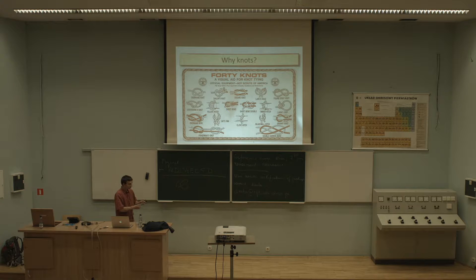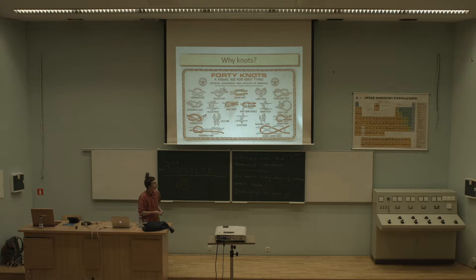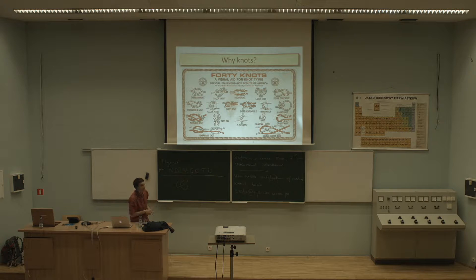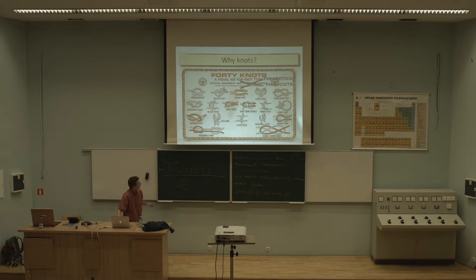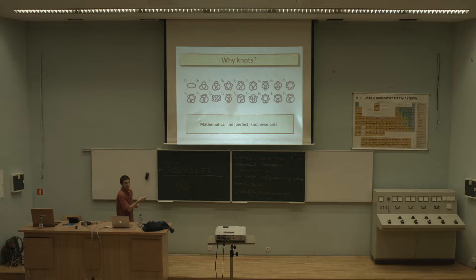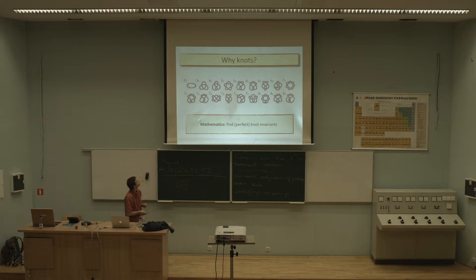Let me briefly say what I mean by nodes. By nodes I mean just what mathematicians mean by nodes, namely some objects which you can make from a piece of string. These are some examples which you can do really at home. I'd like to convince you that these nodes are not only the official equipment of Boy Scouts of America, but they can also be very useful equipment of a theoretical physicist. Mathematicians consider nodes which you can make on a closed string. You take some three-dimensional manifold — it can be R³, but also something more complicated — and you want to embed there a closed curve which does not intersect itself. Mathematicians then find various classifications of these nodes.